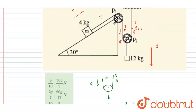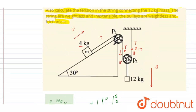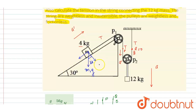Now write the force equation. Let's break mg on the m1 mass into two components: along the plane and perpendicular to the plane. In the downward direction, this angle is 30 degrees, so this angle will be 60 and this will be 30, giving components mg cos 30 and m1 g sin 30.